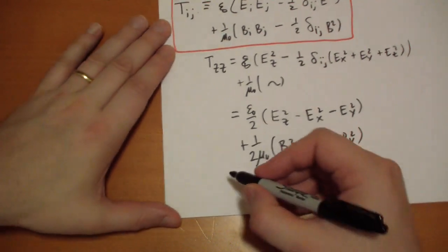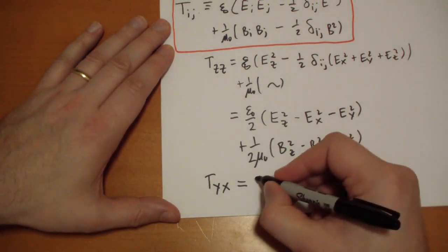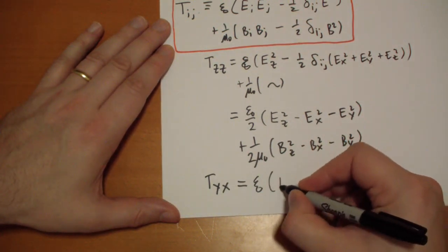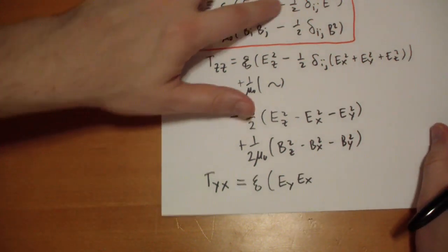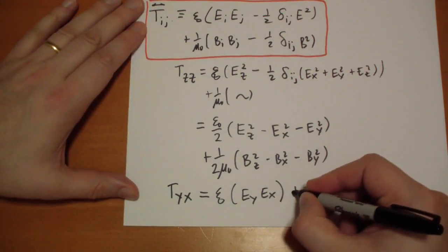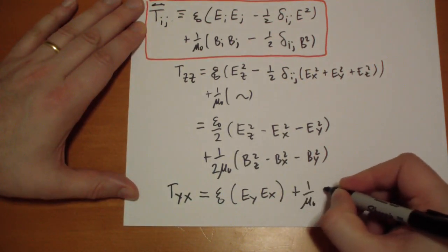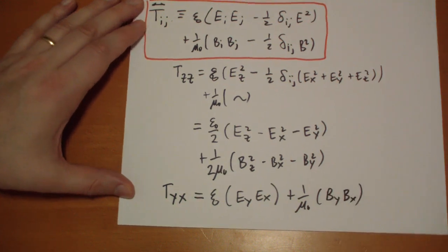Let's do the Y X term. So T Y X is equal to epsilon-knot E Y E X minus 1 half Kronecker delta I J. Well, I J is different so Kronecker delta is 0, so that's it. Plus 1 over mu-knot B Y B X.